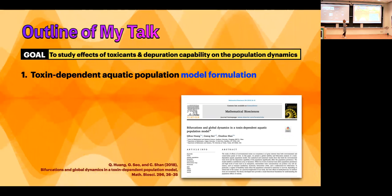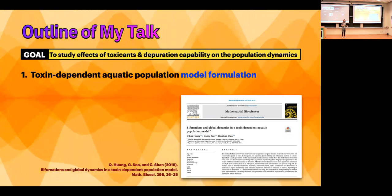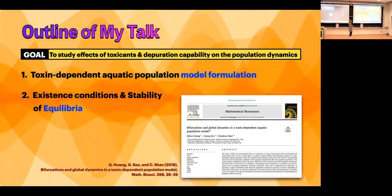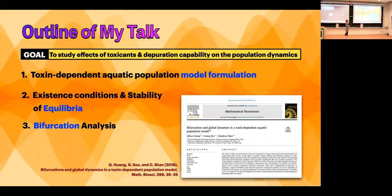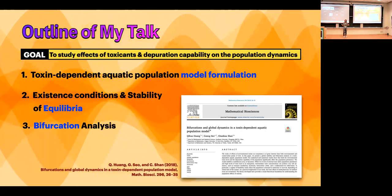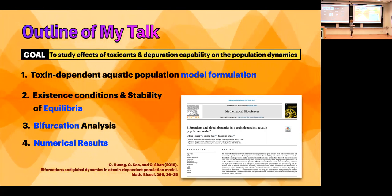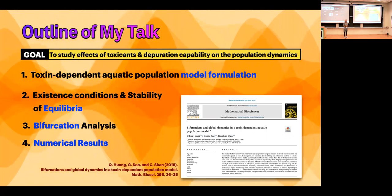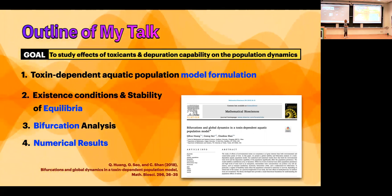As an extension of their study, we studied the effects of both toxicants and depuration capability of the population on population dynamics. Here is my outline for today's talk: first, model formulation; second, existence conditions and stability of equilibrium; third, bifurcation results; and fourth, numerical results using experimental data showing toxicant effects on the fish population.